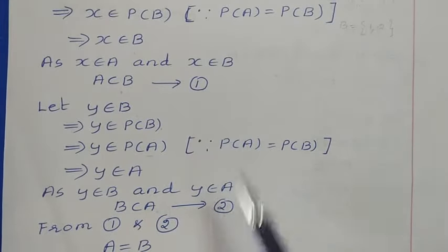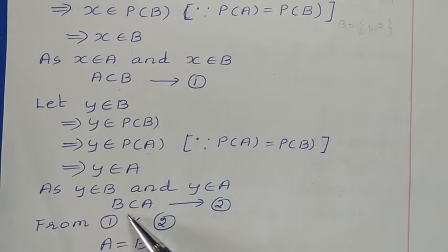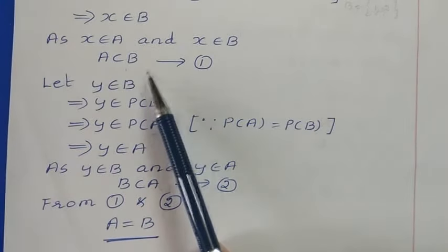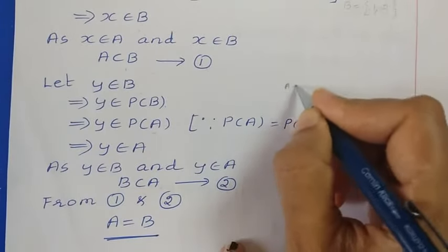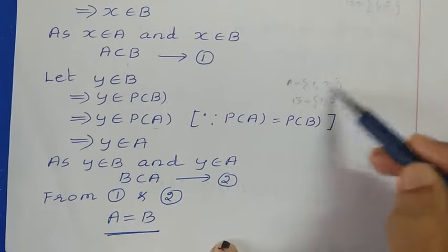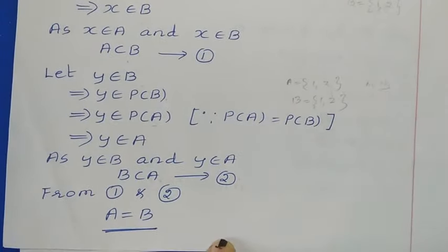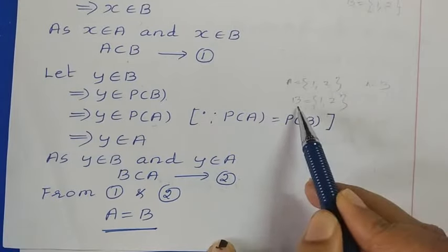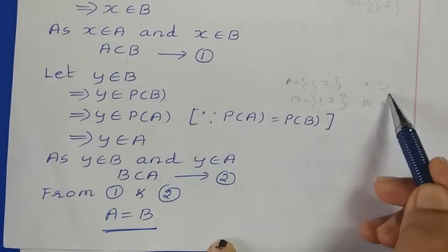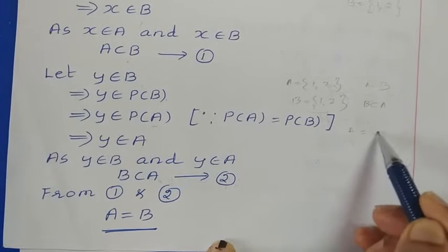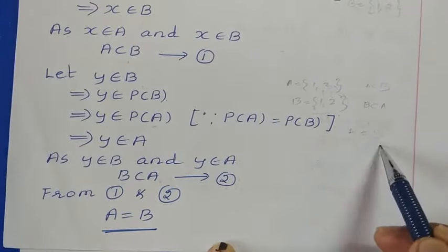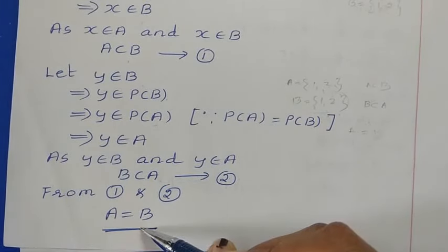Comparing both conditions: A is a subset of B and B is a subset of A. This implies A is equal to B. For example, if A has elements 1 and 2 and B also has elements 1 and 2, all elements of A are in B so A is a subset of B, and all elements of B are in A so B is a subset of A. Since both conditions are satisfied, the two sets are equal. From conditions 1 and 2 we get A is equal to B.